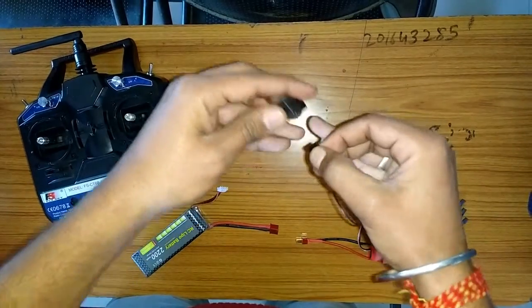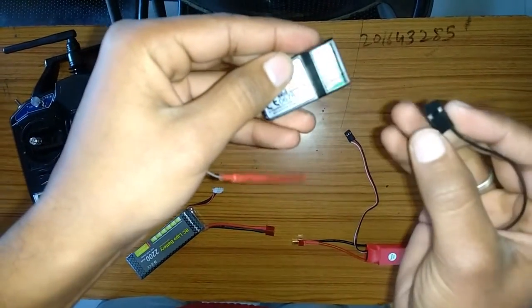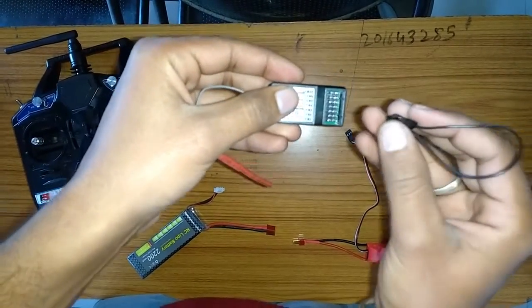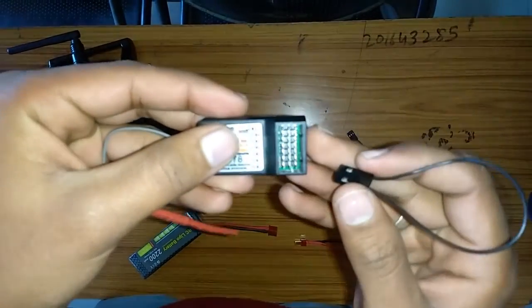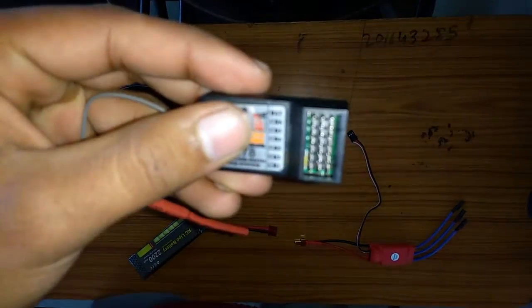In this binding process, the components you need are: Flysky CT6B transmitter, a Flysky receiver, one electronic speed controller to power your receiver, a binding cable, and the lipo battery.